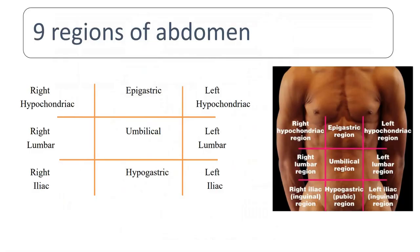Now let's go to the abdomen. You can divide your abdomen into nine regions. The navel area is called the umbilical region. Above that, you have the epigastric region — 'gastric' means stomach, so epigastric means above the stomach. Then you have the hypogastric region — 'hypo' means below, so it's below the stomach. You can also call it the pubic region.